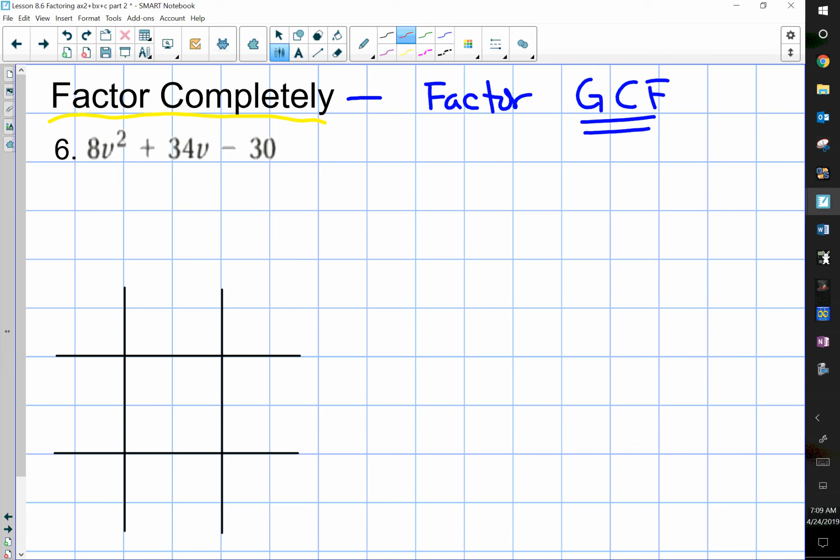So, if you look at this problem, 8v squared plus 34v minus 30, what you should notice is they're all even. So, this trinomial has a common factor of 2, but is that the greatest common factor? Well, if you're not sure, try a bigger number like 4, and see if 4 will divide evenly into each of these terms. And it turns out that 4 does not, so we're going to go with 2. The greatest common factor is 2.